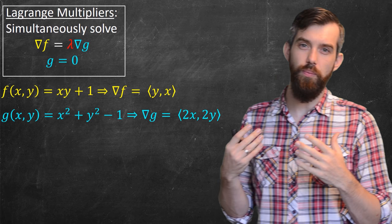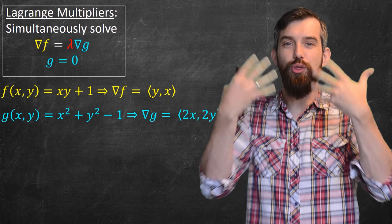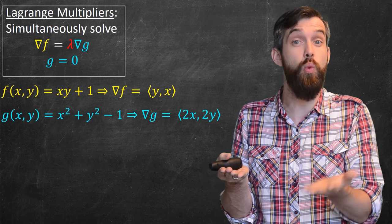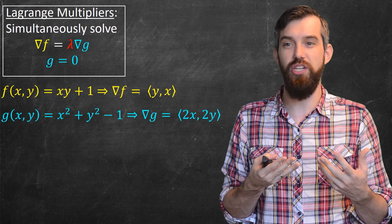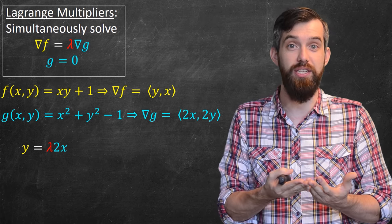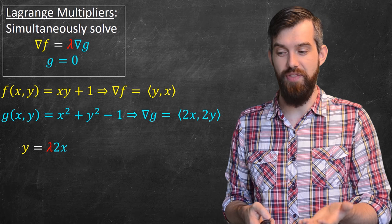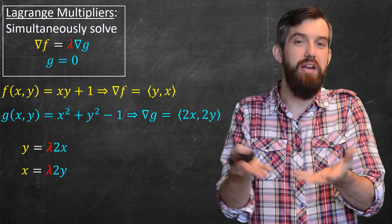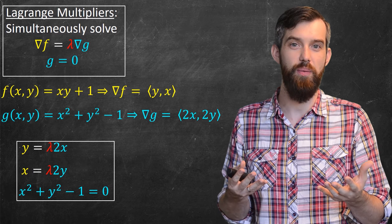These two equations are really three equations in three unknowns: x, y, and lambda. The vector equation ∇f = λ∇g gives two component equations: y = λ(2x) from the first components, and x = λ(2y) from the second components. The third equation is the constraint: x² + y² - 1 = 0.